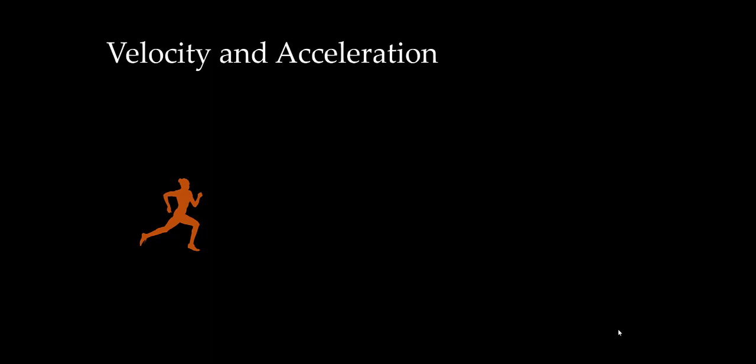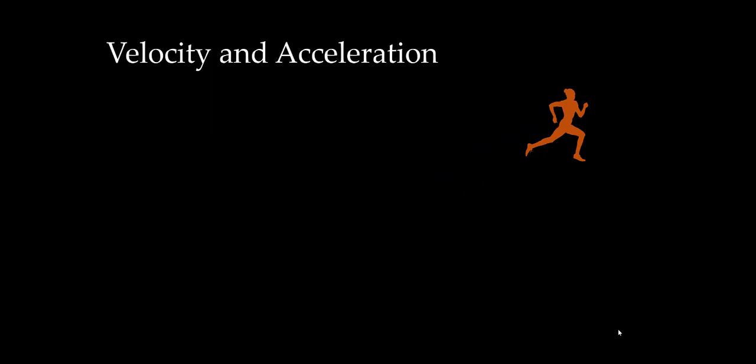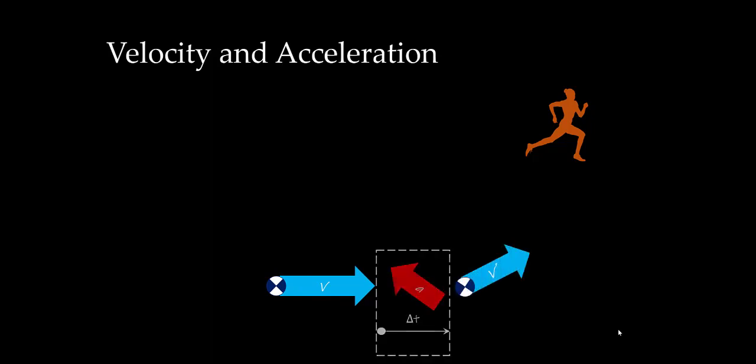Remember that velocity is a vector, so it has both a magnitude and a direction. In the previous cases, we talked about changing the magnitude of the velocity vector. Now let's see what happens when we change the direction. In this case, the athlete performed a cutting maneuver and changed the direction of her velocity—she went off on an angle. So now we see that her velocity changed, and once again the acceleration caused that change. The acceleration vector might look a little strange, but if we use the rules of vector addition, we can see that the acceleration vector is oriented that way. From this information, can you determine the direction of the force vector?